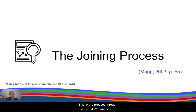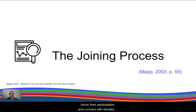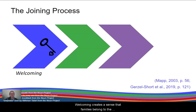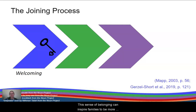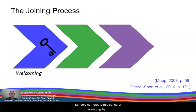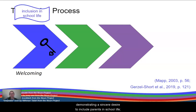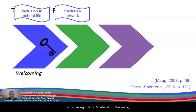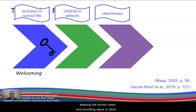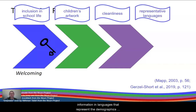The joining process is a process through which staff members welcome families into the school, honor their participation, and connect with families through a clear focus on their children. Welcoming creates a sense that families belong to the school and the school belongs to them, which can inspire families to be more engaged in their children's education. Schools can create this sense of belonging by demonstrating a sincere desire to include parents in school life, showcasing children's artwork on the walls, keeping the school clean, and providing signs or other information in languages that represent the demographics of the school community.